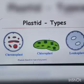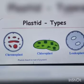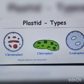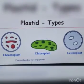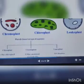Today we are going to study about plastids and endoplasmic reticulum. We'll start with plastids. There are three types of plastids: chromoplast, chloroplast, and leucoplast. We'll go through them one by one.